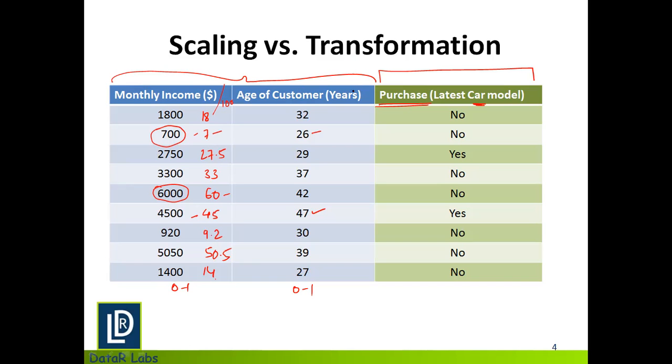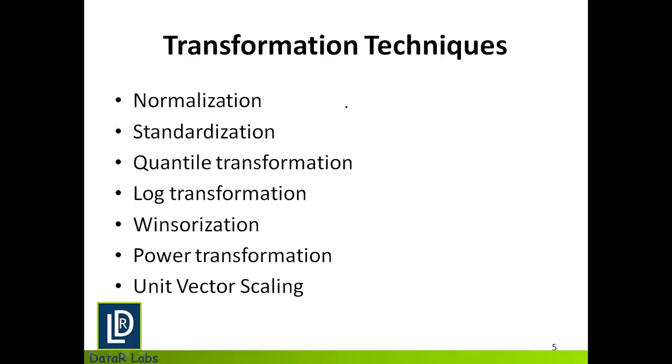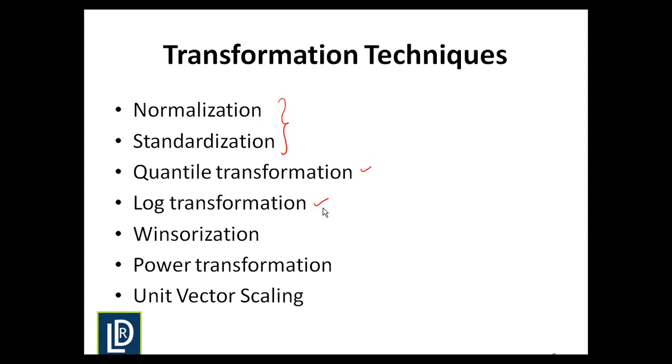So now let's talk about the transformation techniques which we have for our use. Now the most popular transformation techniques which we'll discuss more in depth today are normalization and standardization. Apart from that, we also have techniques like quantile transformation, log transformation typically helps me when I have a handful of values which have many points, while most of the values have fewer points. So for example, cases like the movie ratings where a lot of people tend to rate fewer of the movies, while the rest of the movies get very little rating.